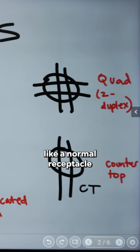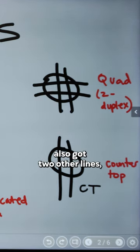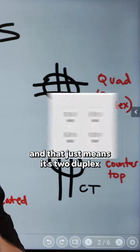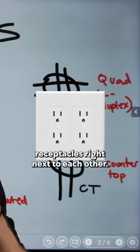So it's got two lines like a normal receptacle would have, but then it's also got two other lines, and that just means it's two duplex receptacles right next to each other.